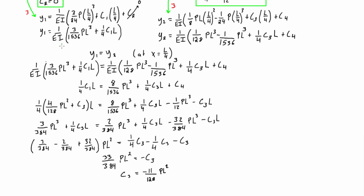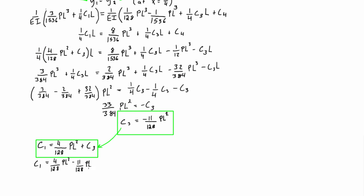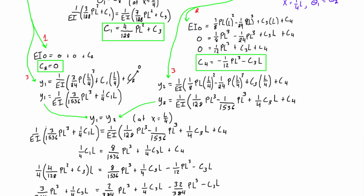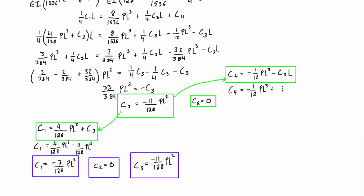Awesome. So again, that y1 came from there, that y2 came from there. And now what we do have is we have an expression for each of our integration constants, C1, 2, and 3. So we can use them now to basically start plugging in C3 into each of them, and we'll be able to find out what the rest of them are in terms of P and L.